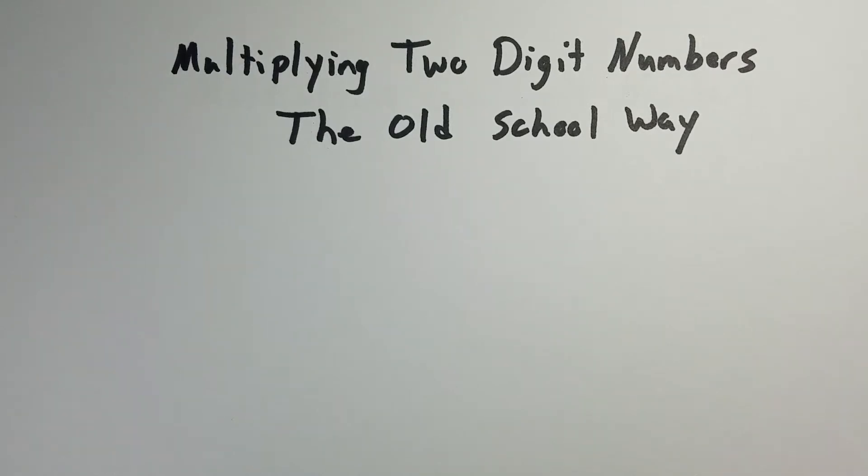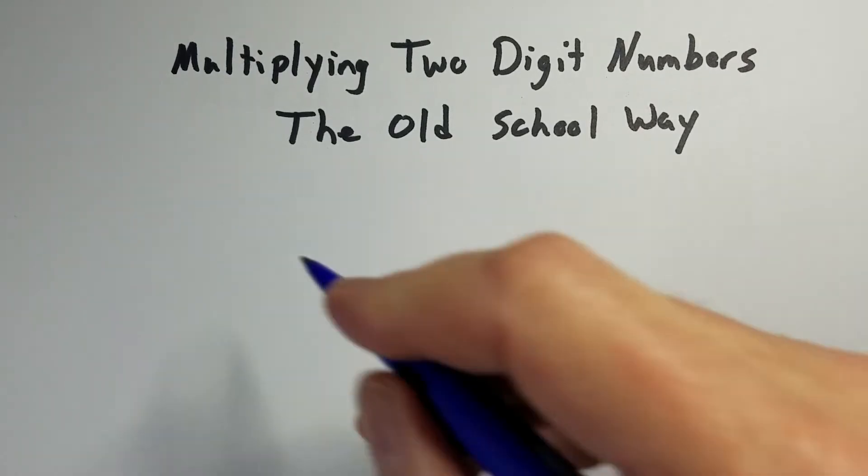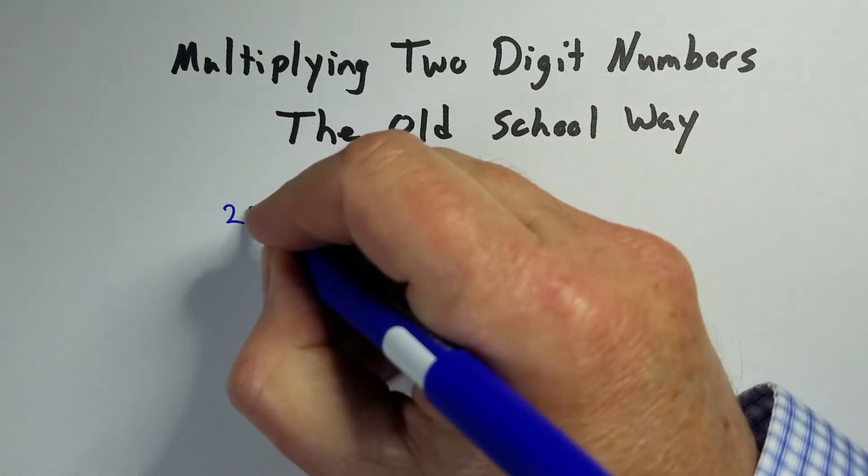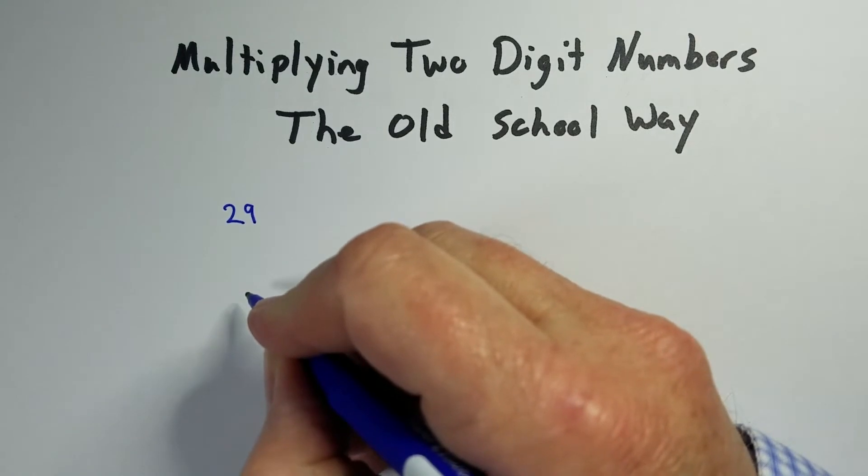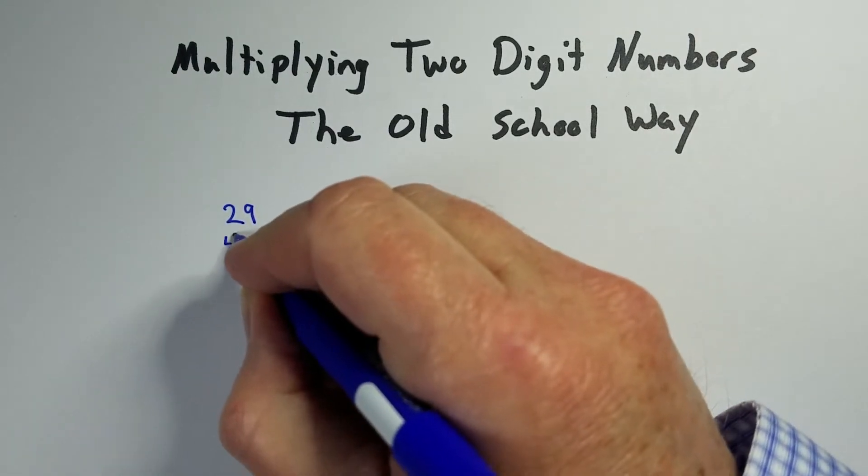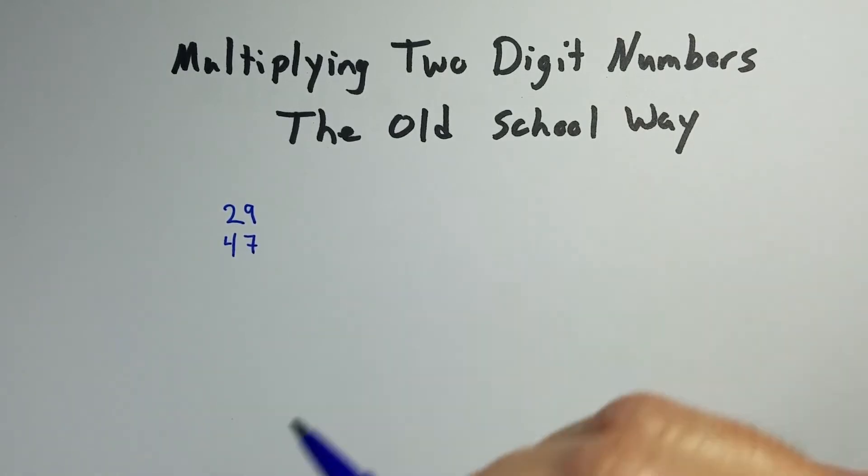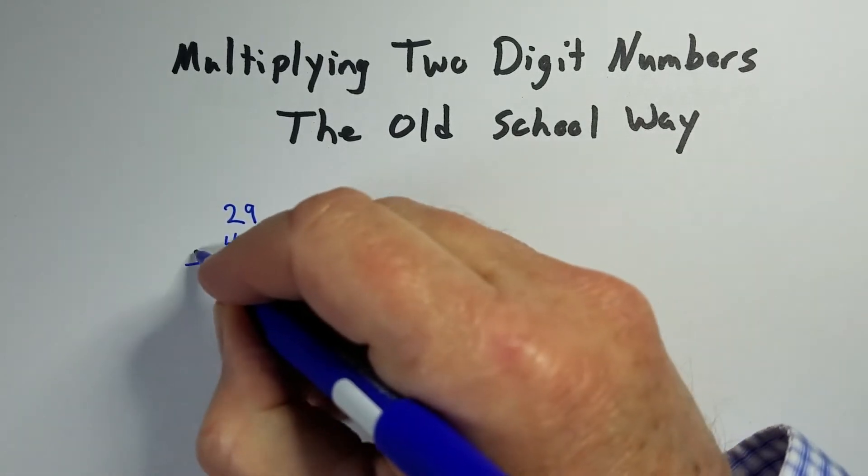Hi, this is Kayleigh, and we're going to work on multiplying two-digit numbers together. There's a lot of new ways that people are doing this that quite frankly kind of confuse me. They're doing slash lines and boxes and everything else. I'm just going to show you how to do it the old school way.